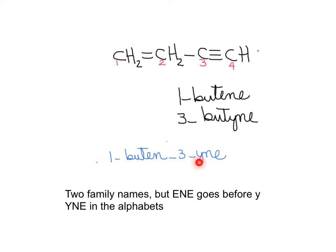E will always go before Y, regardless of what is the position of the triple bond or double bond.